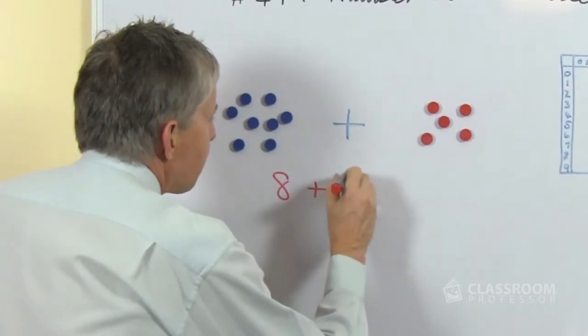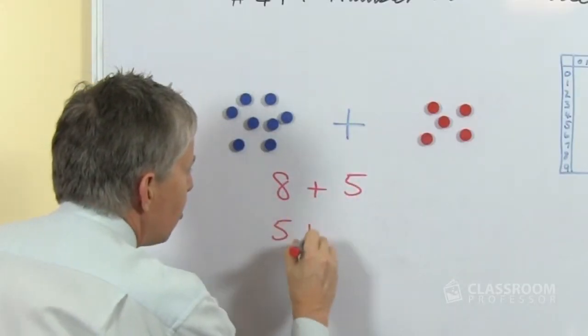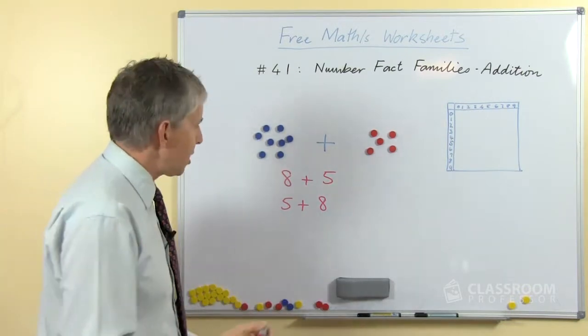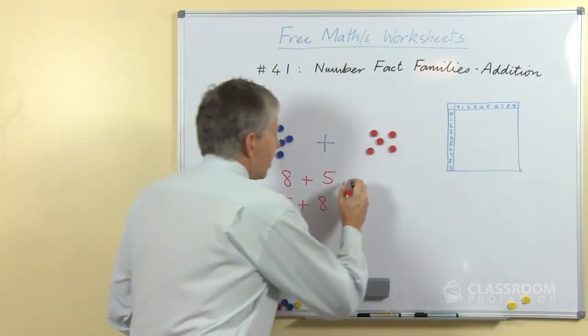This happens to be 8 plus 5, and we know that we can turn that around, and so we have what we call turnaround facts.